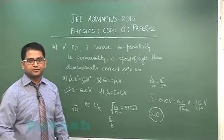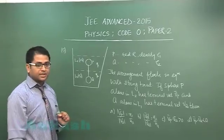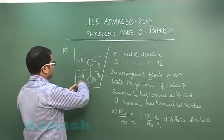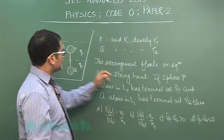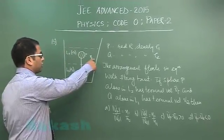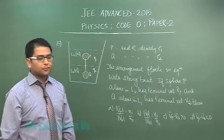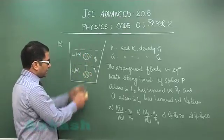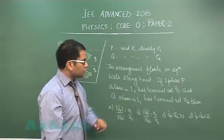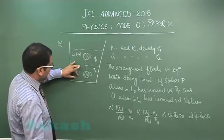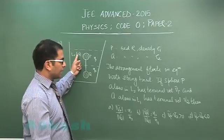Now let us move to question number 15, another beautiful question set from hydrostatics. There are two liquids of density σ₁ and σ₂, and two spheres P and Q with the same radius and densities ρ₁ and ρ₂ respectively. The viscosity coefficients of the two liquids are η₁ and η₂, and this arrangement floats in equilibrium with string tension τ — meaning one sphere tends to go up and the other down. Sphere P alone in liquid L₂ has terminal velocity Vp, and sphere Q alone in liquid L₁ has terminal velocity Vq.